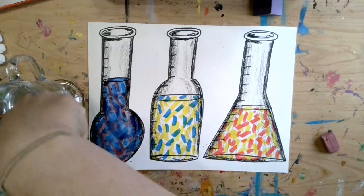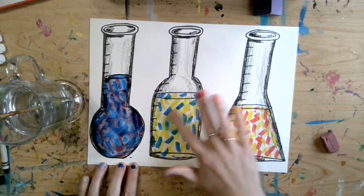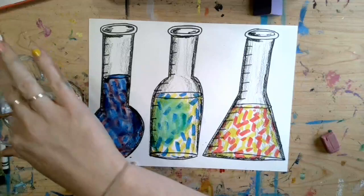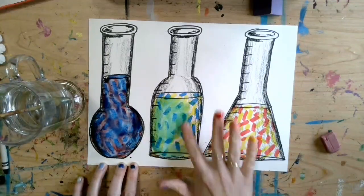All right, let's do the middle one. I'm going to use my finger on this one. Blue and yellow mixing together to make a green. It almost looks like a radioactive green. That's awesome.